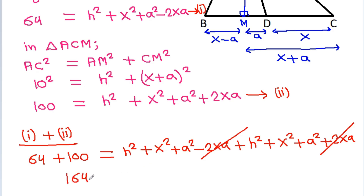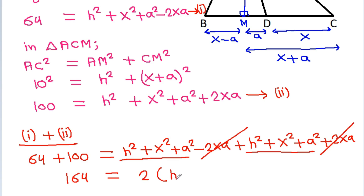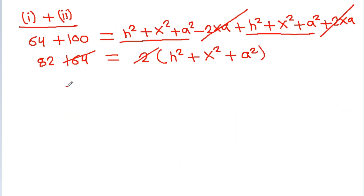So 164 equals 2 times H square plus X square plus A square. Dividing both sides by 2, we get 82 is equal to H square plus X square plus A square.